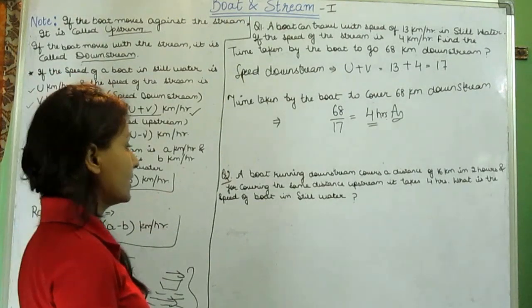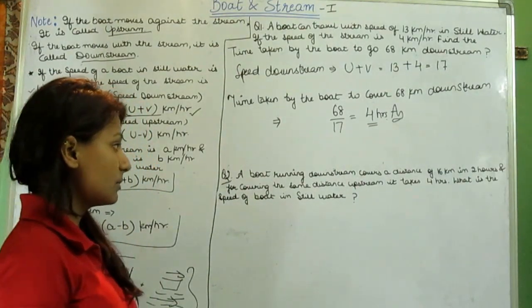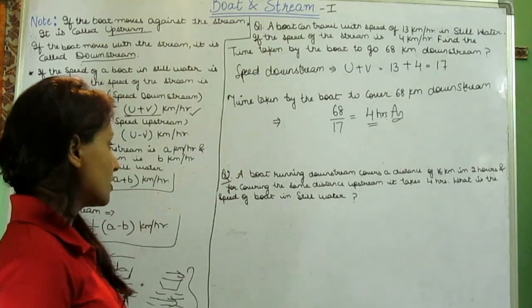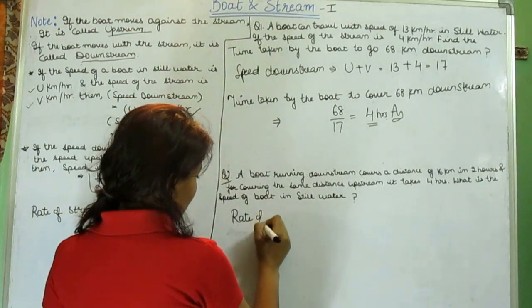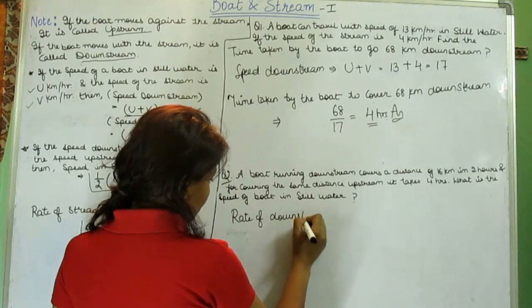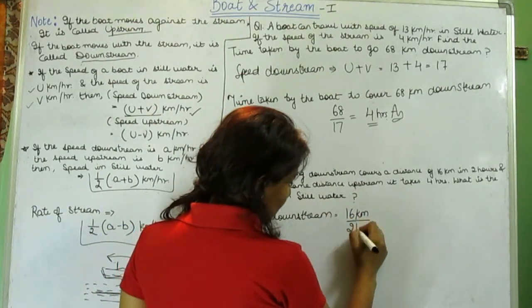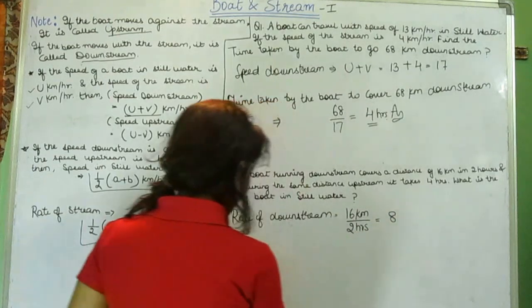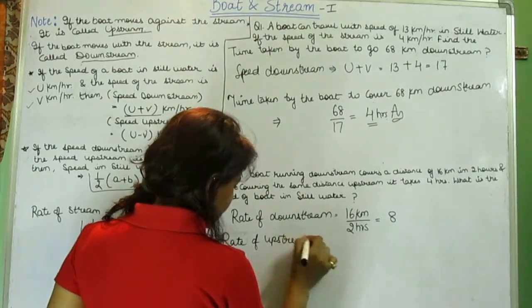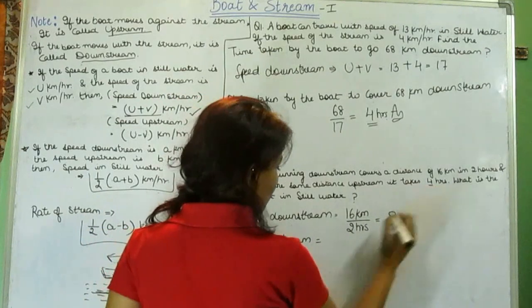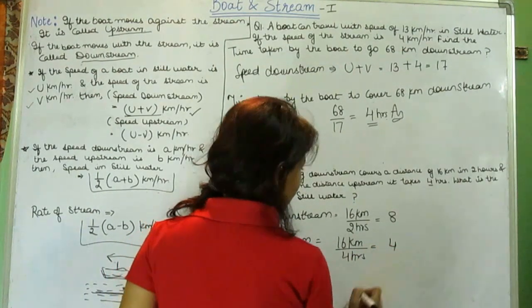Next question is, a boat running downstream covers a distance of 16 kilometers in 2 hours, while covering the same distance upstream it takes 4 hours. What is the speed of the boat in still water? Rate of downstream, 16 kilometers in 2 hours, it means 8. And rate of upstream was 16 km by 4 hours, that will be 4.